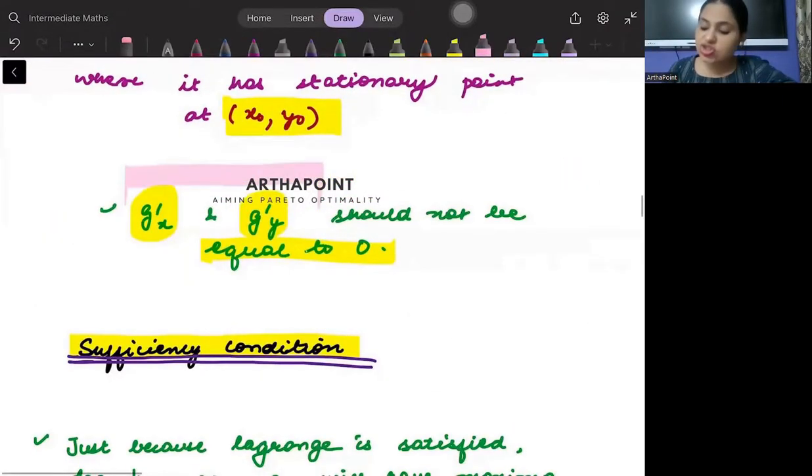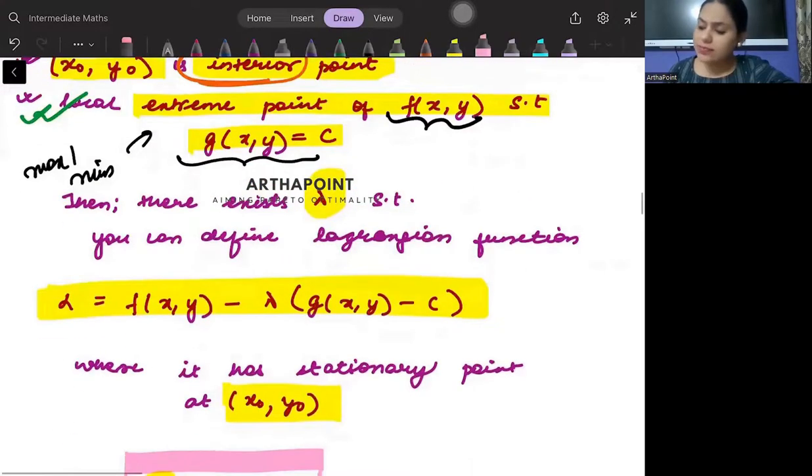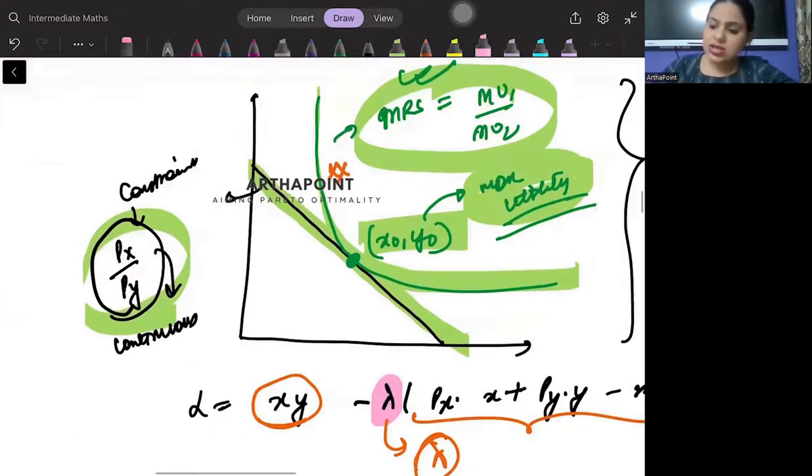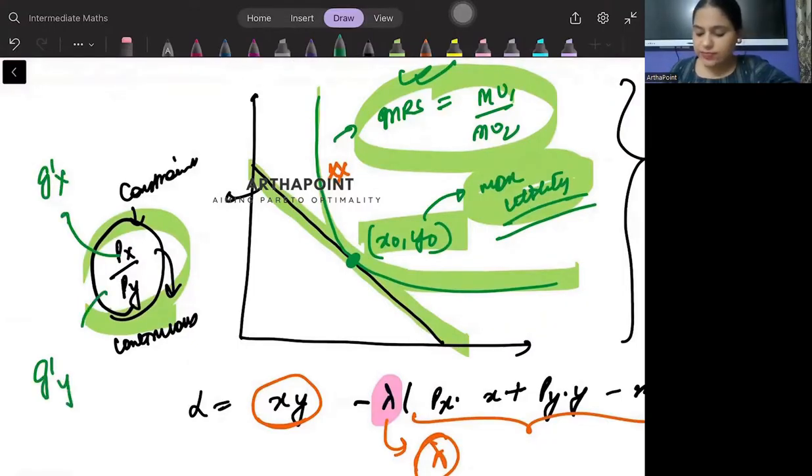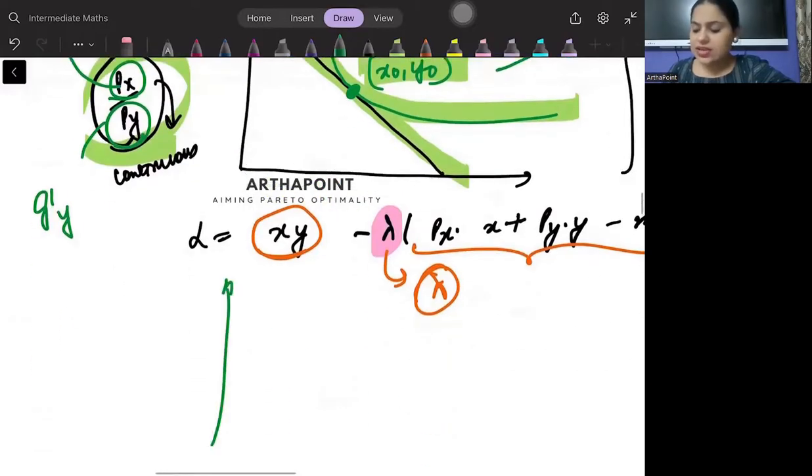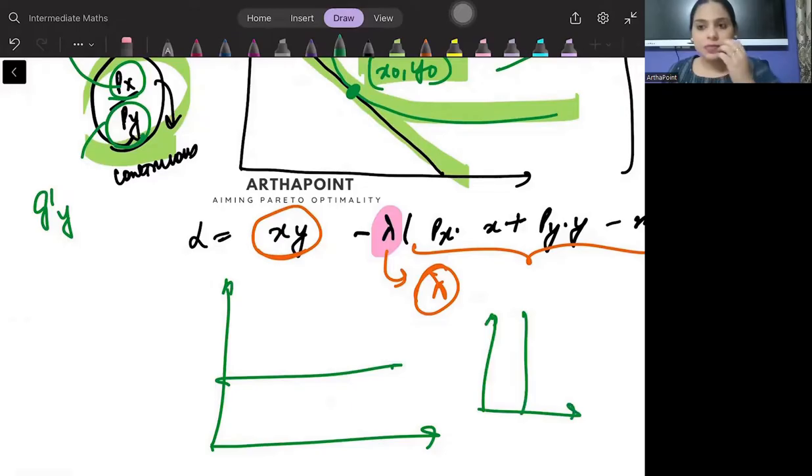G dash x and G dash y should not be 0. Matlab, agar mein yahan pe baat karo. If I talk in this case, then this is G dash x. This is G dash y. Toh agar price of good x ya price of good y is 0 ho jai. Then I can't have this budget line na. In that case, ya toh meri budget line aisi hogi. Ya meri budget line aisi hogi. It won't be downwards looking. Price of one good is 0. Are you getting it?